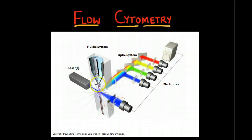Each suspended cell that passes through the beam scatters the ray, and the fluorescent chemicals that are found in the particle or attached to the cell may emit light at a longer wavelength than the light source. This combination of scattered and fluorescent light is picked up by these detectors.